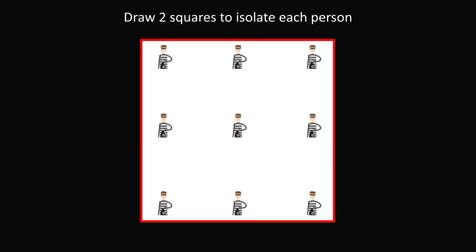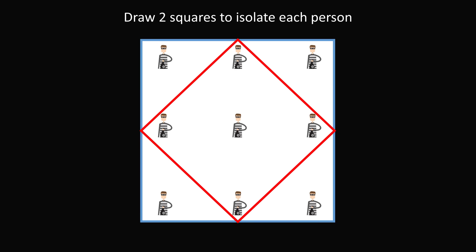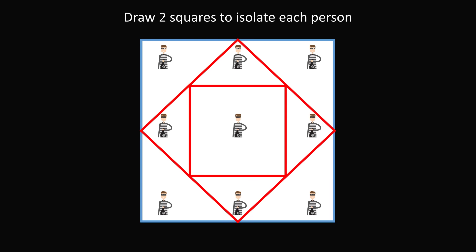Let's start with the boundary square. If we scale and rotate it, we can isolate the four people in the four corners. With one square, we isolate the four corner people. But the inner arrangement forms another square — if we scale and rotate that second square, we isolate those four inner-corner people and also the person in the center. We now have a solution where two squares isolate each of the nine people. Amazing!